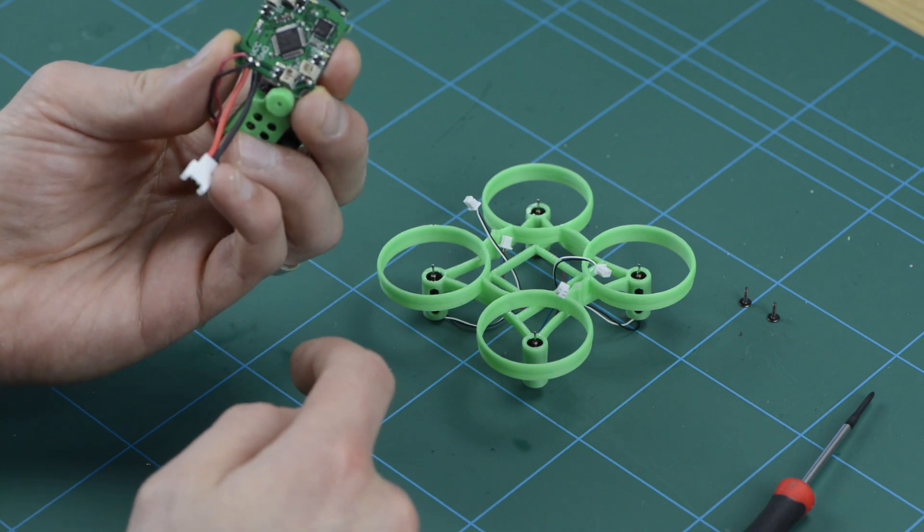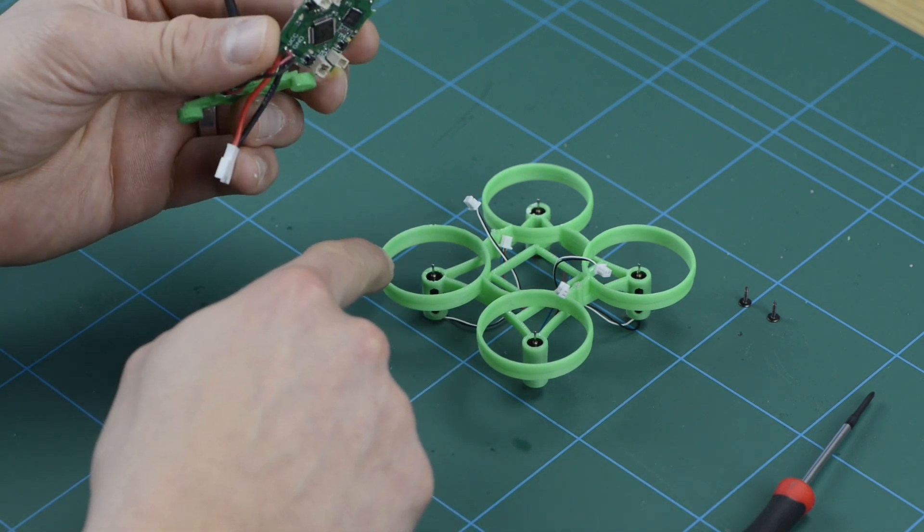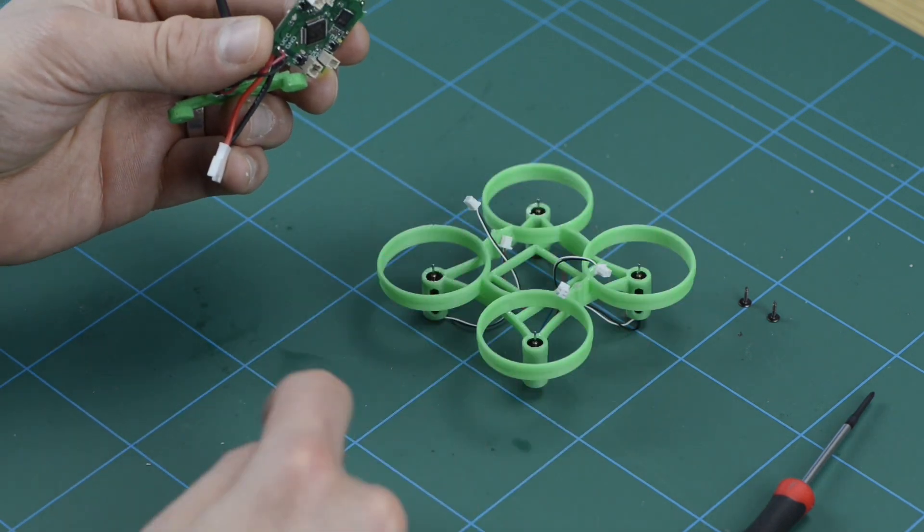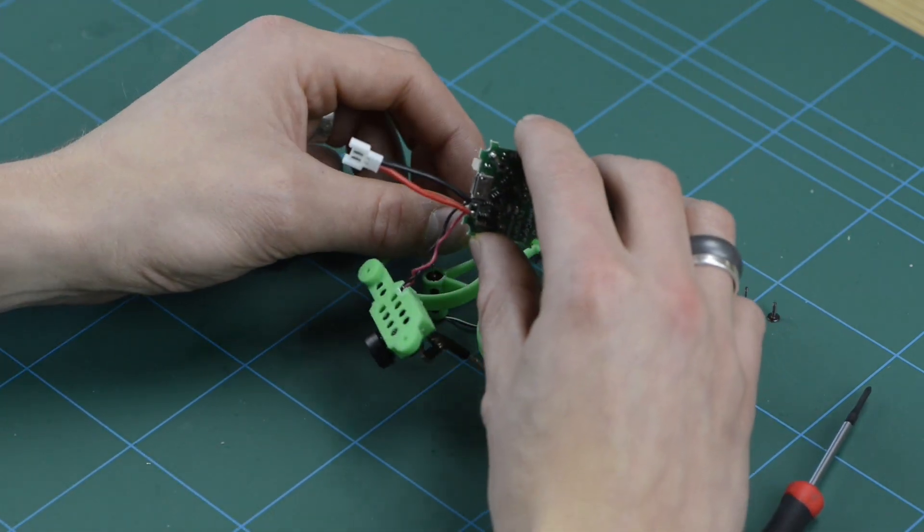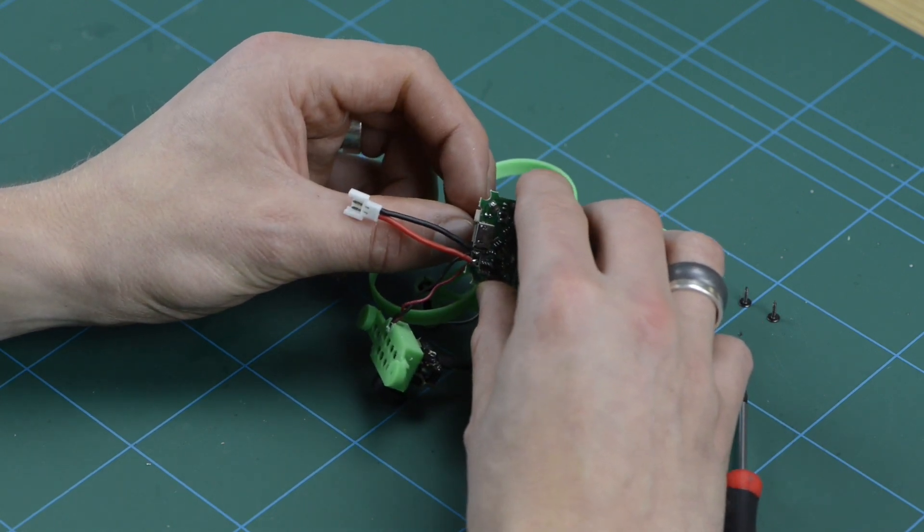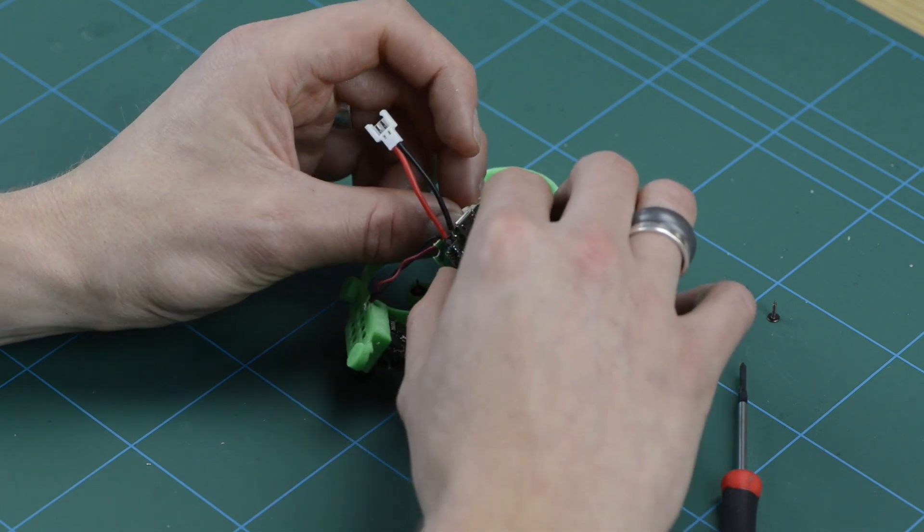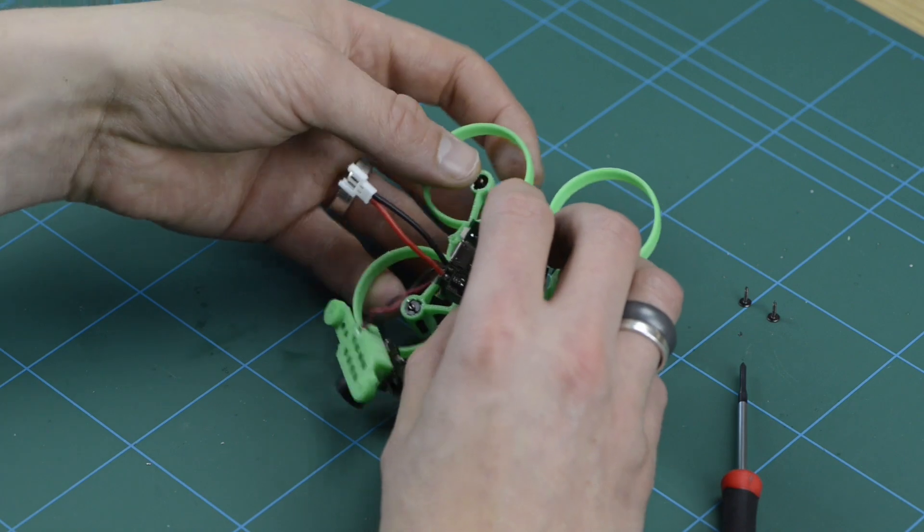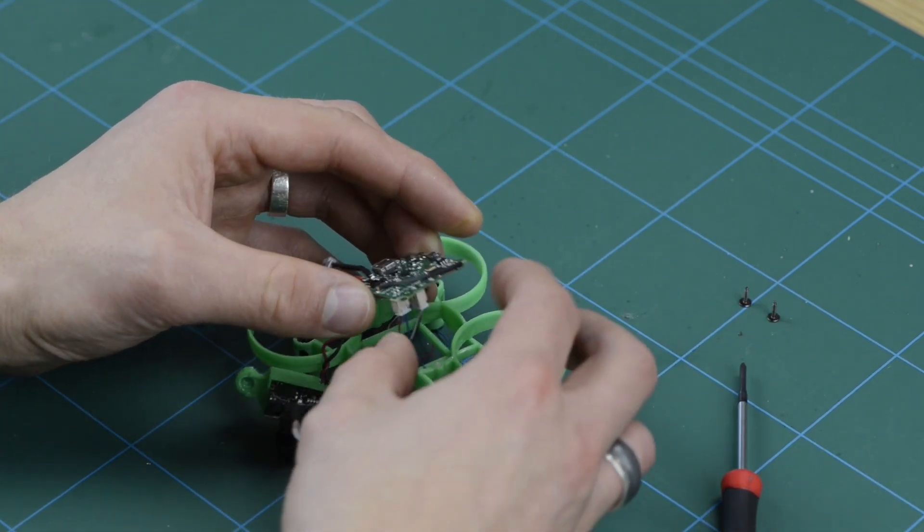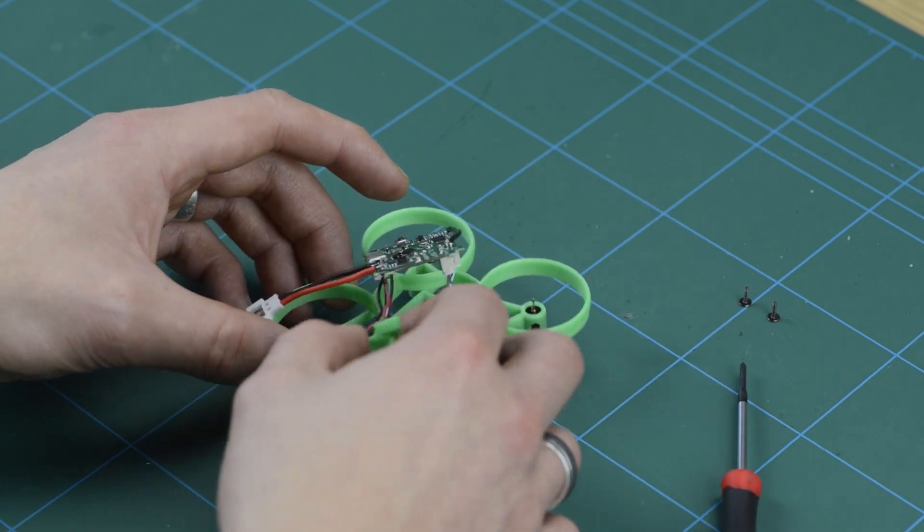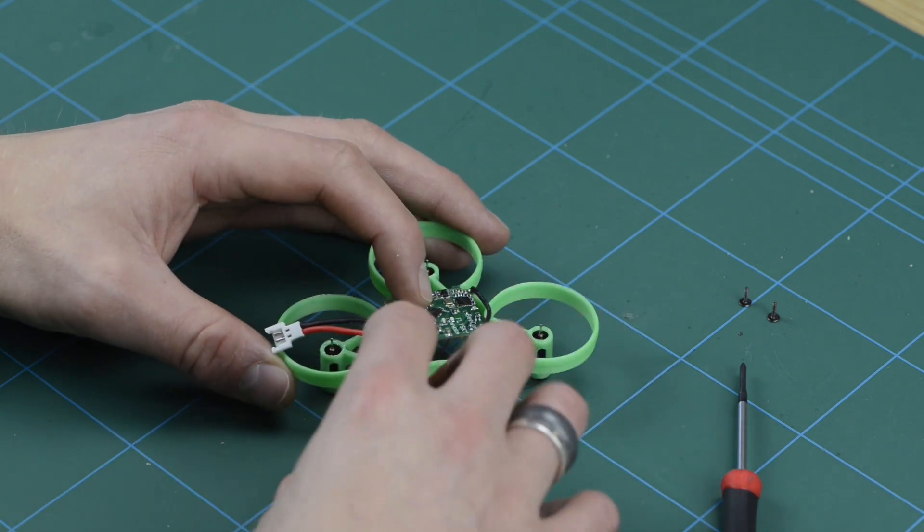So that will be M3 for your bottom left, M4 for your top left and working your way around. So if you just hold the flight controller in the right place and connect the motors to the nearest port, those connectors are polarity sensitive, so they'll only go in one way around and then once they're in, you can then put the flight controller in the correct place.